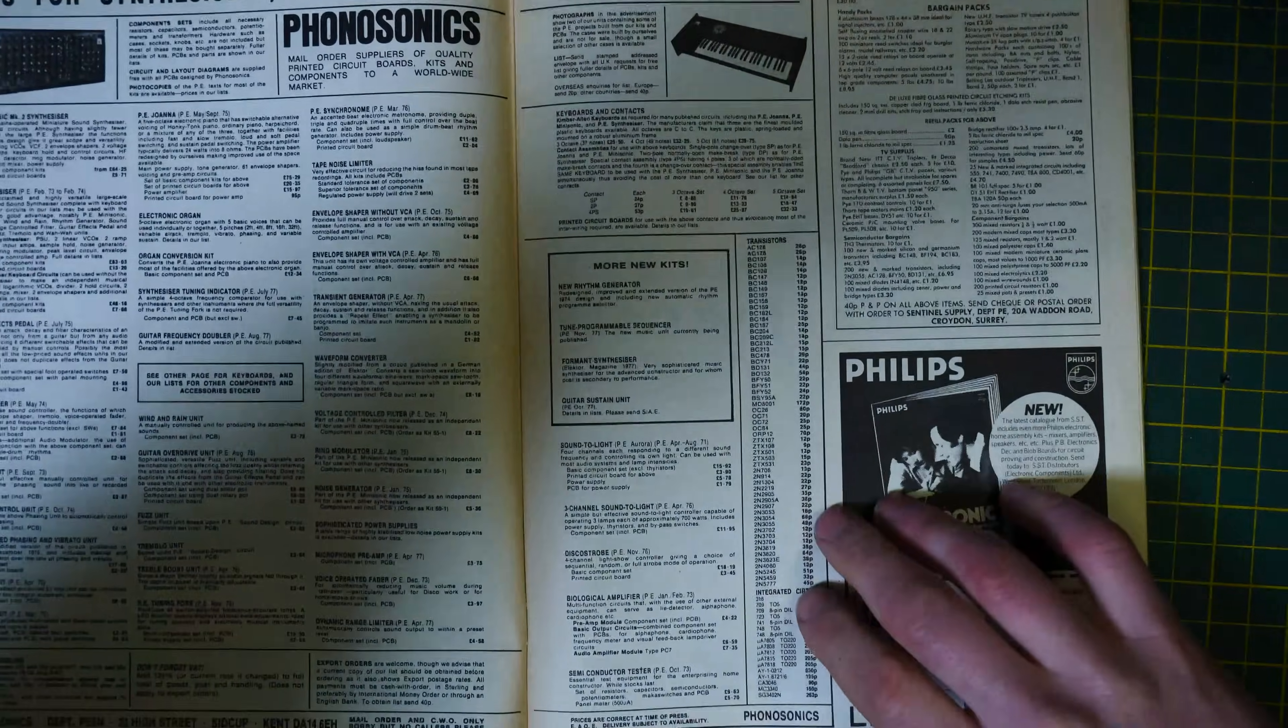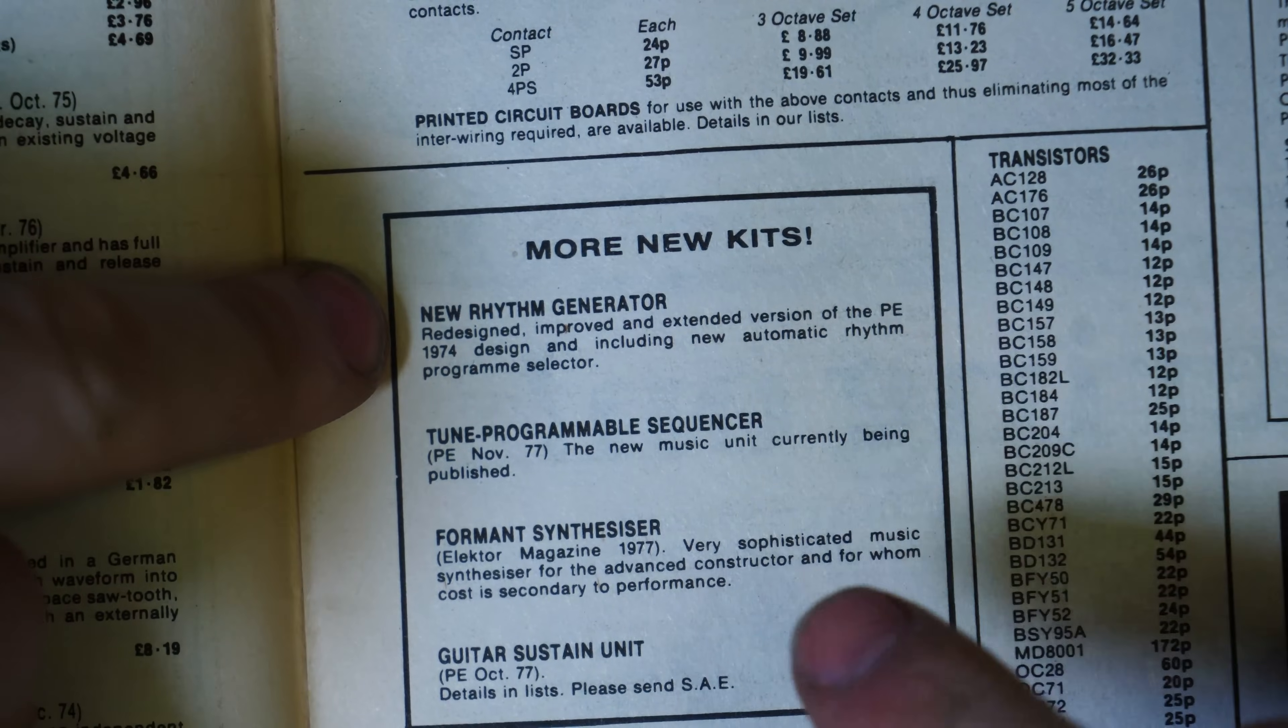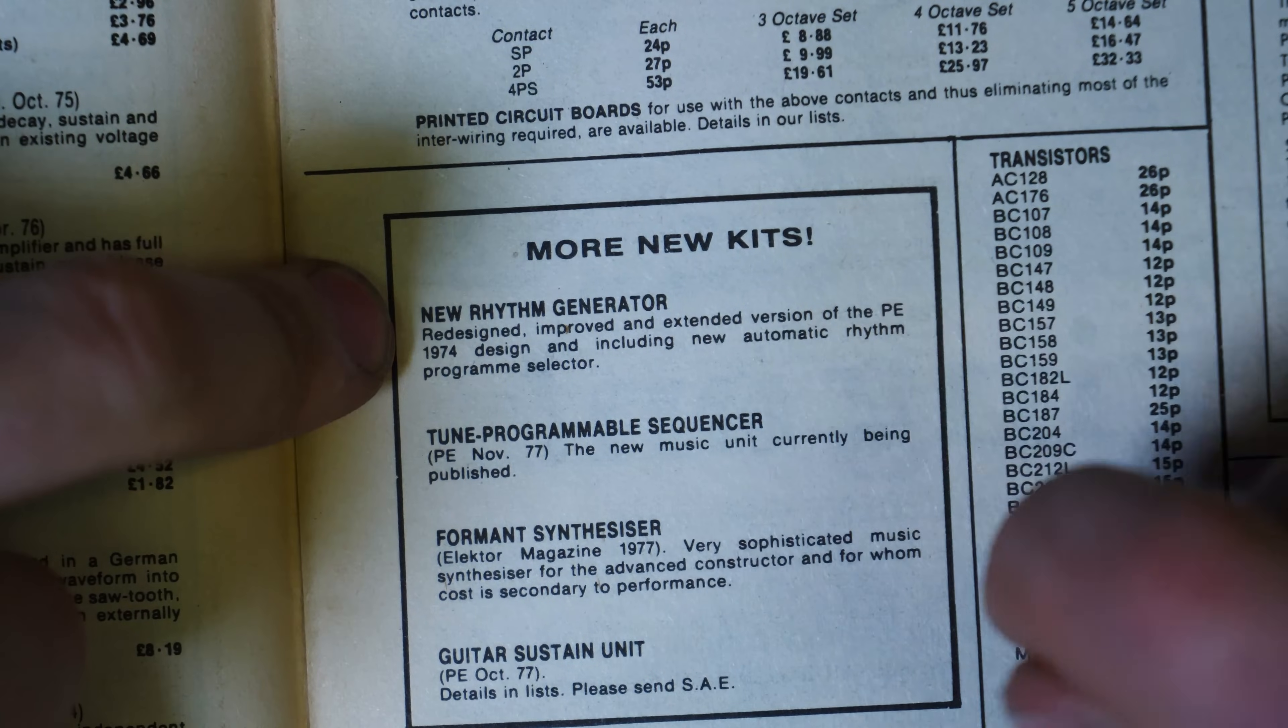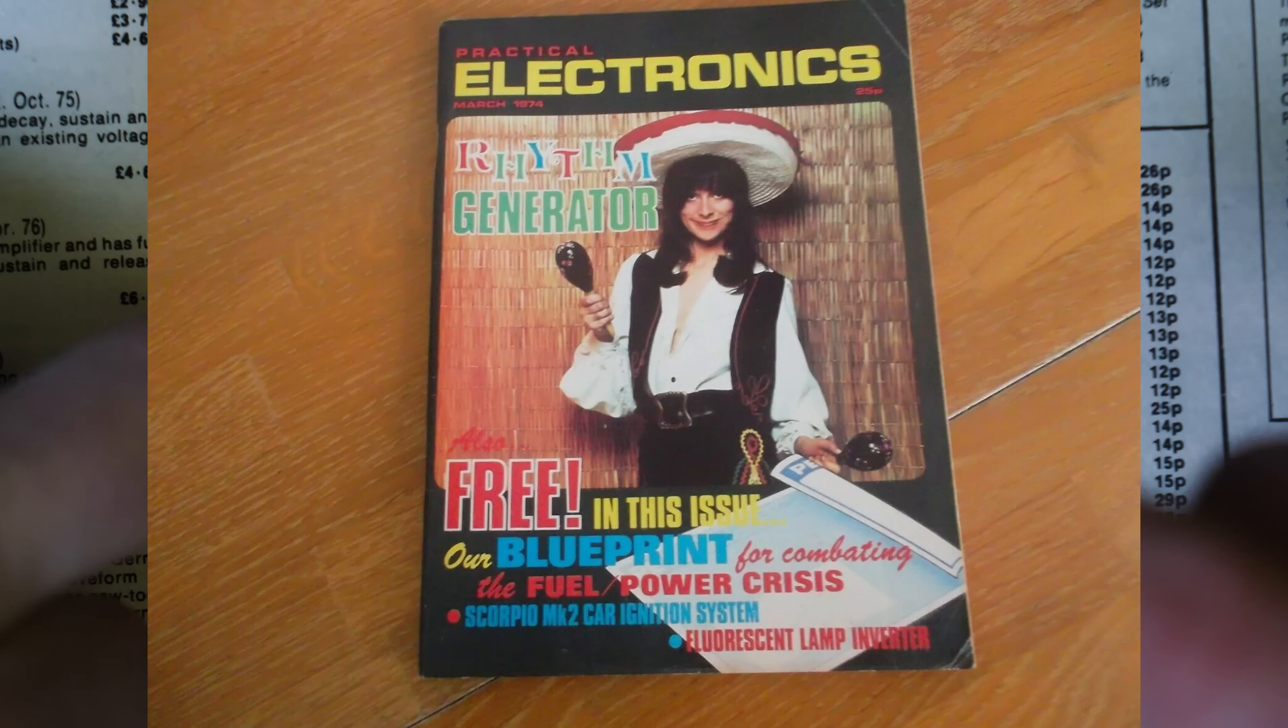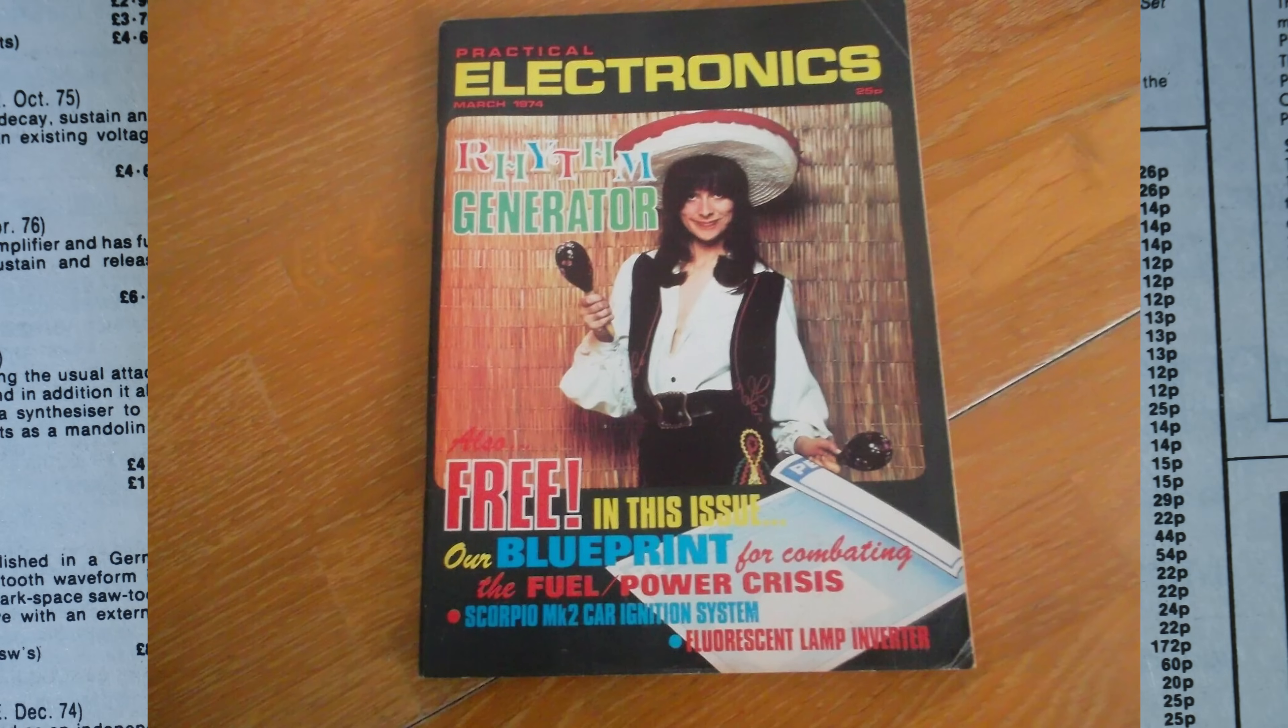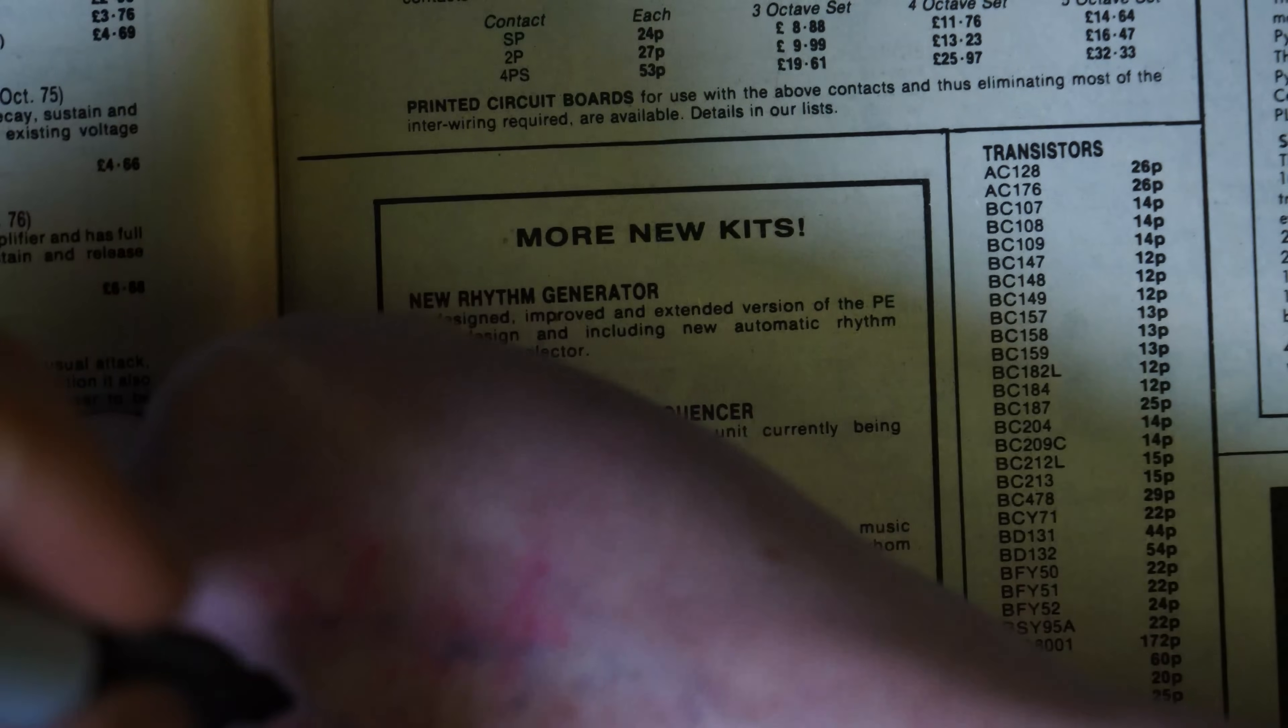And just before we go to the Rhythm Generator, I have just noticed on this page, brand new kits. Here we go. It's the same new Rhythm Generator. Redesigned, improved, and extended version of the Practical Electronics 1974 design. I'm going to have to find that as well. Oh, that's interesting. There's an even older design of this one.